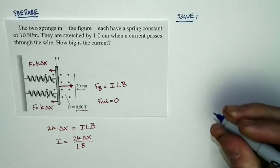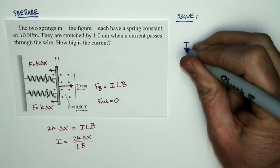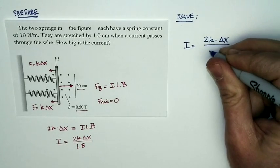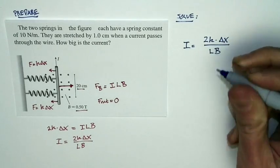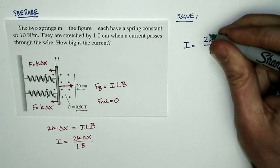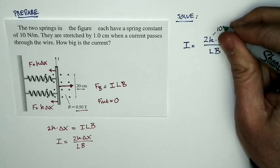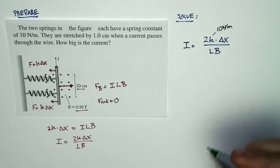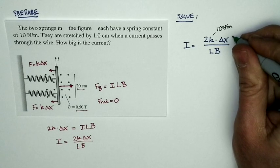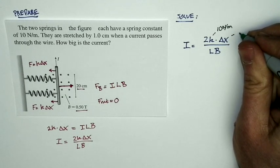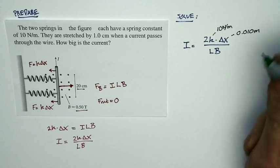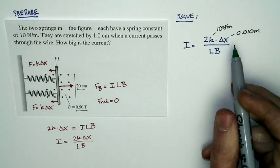Now, the solution just looks like this. The current is 2 times k times delta x, divided by l times b. k is the spring constant of the springs. The spring constants are 10 newtons per meter. That's not a particularly stretchy spring. And they're not stretched very far. They're only stretched by 1 centimeter, 0.010 meters. So the spring force is going to be pretty tiny.